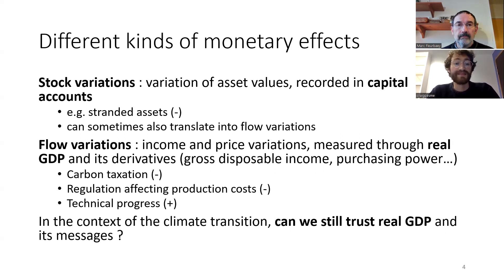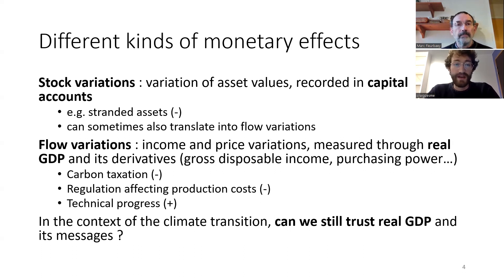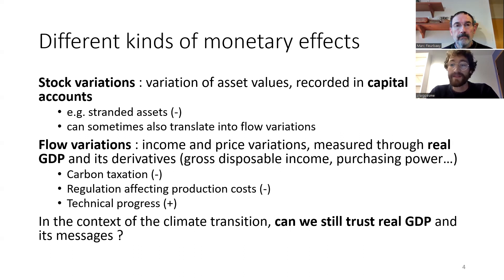These stock variations can sometimes be translated into flow variations. For instance, if companies have to increase their cost reductions, this could translate into price increases. This is the first kind of effect. The second kind, which we will mostly talk about in this talk, is flow variations, which corresponds to variations in income and prices. This is recorded in real GDP and other close indicators, such as the famous purchasing power.